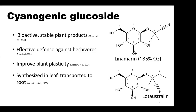Specifically in cassava, cyanogenic glucoside is synthesized in the leaf and transported to the root, and is usually partitioned between the peel of cassava and the parenchyma.